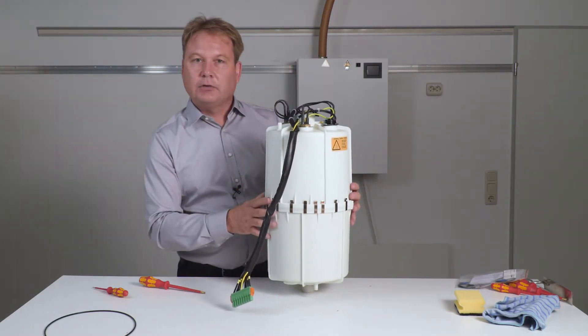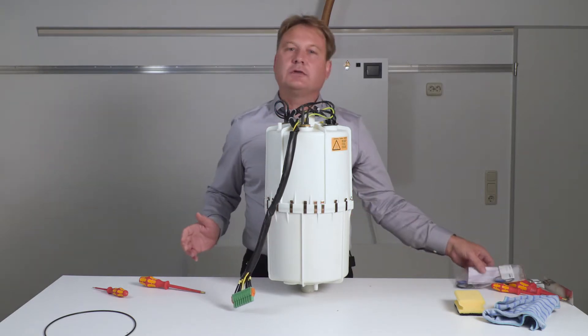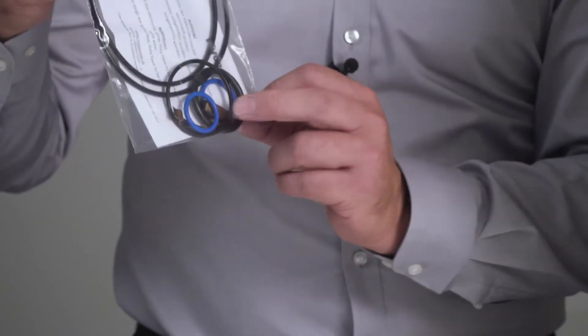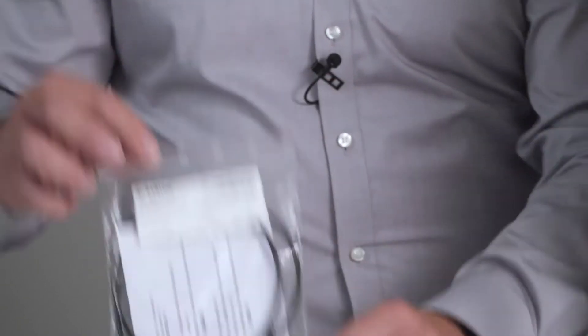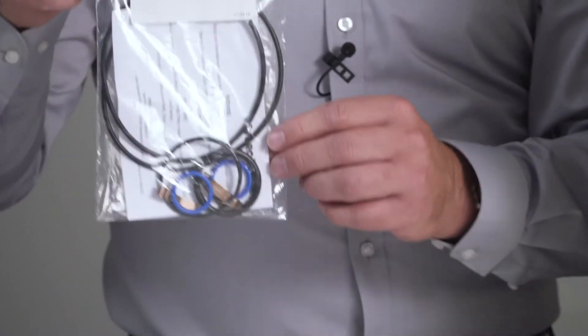Should you ever lose a clamp, you will find three replacement clamps in the O-ring set. You don't have to attach them additionally. These three clamps are only intended as replacements.